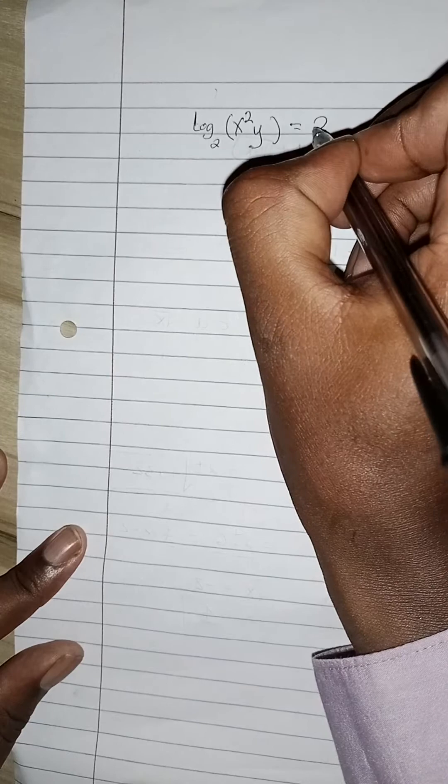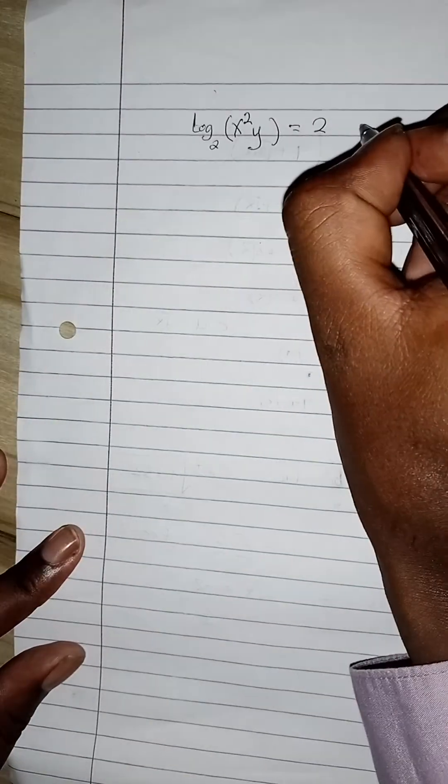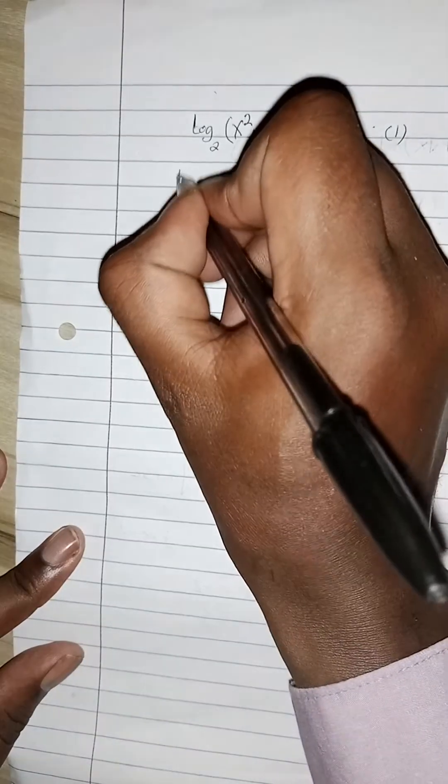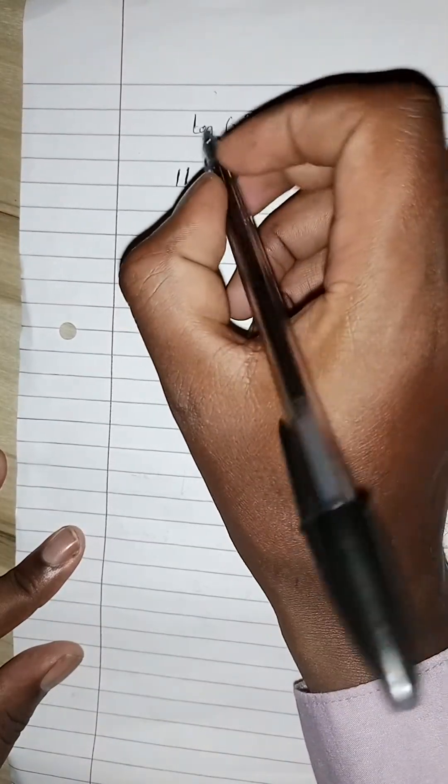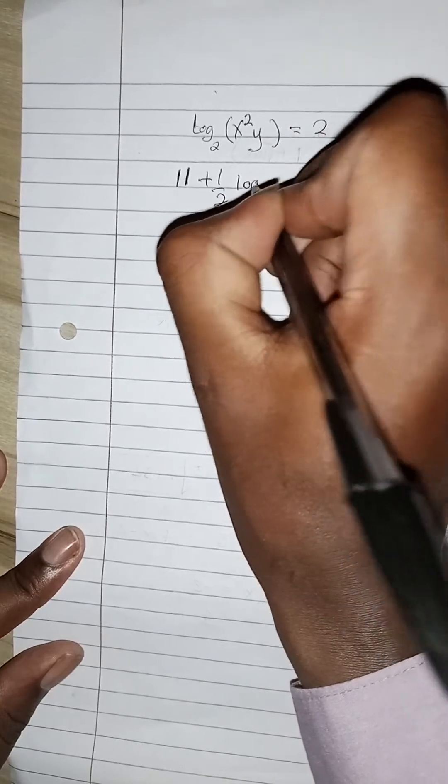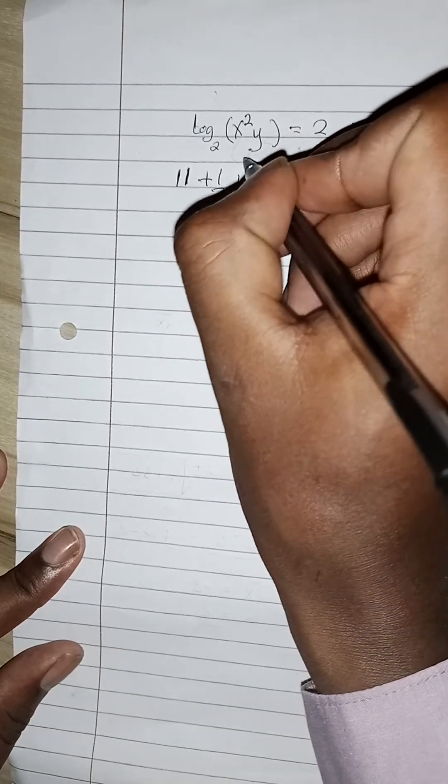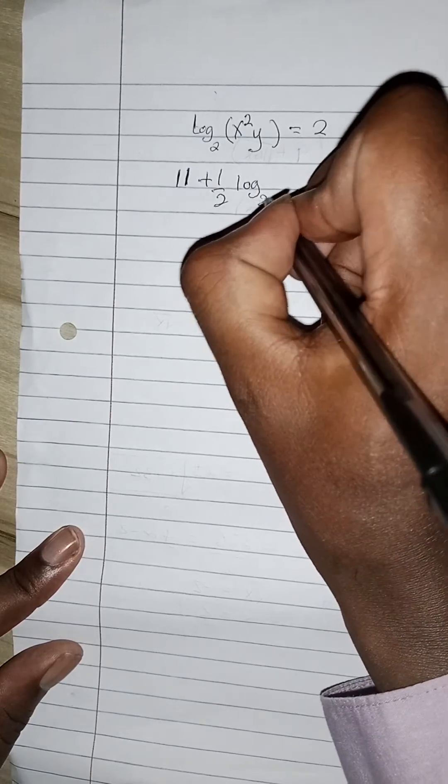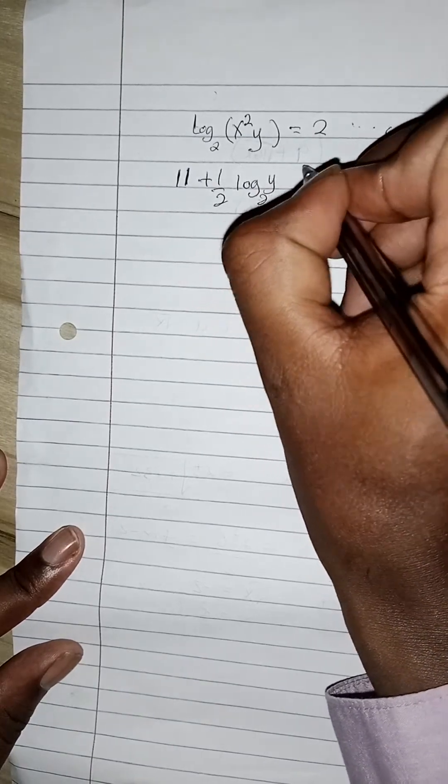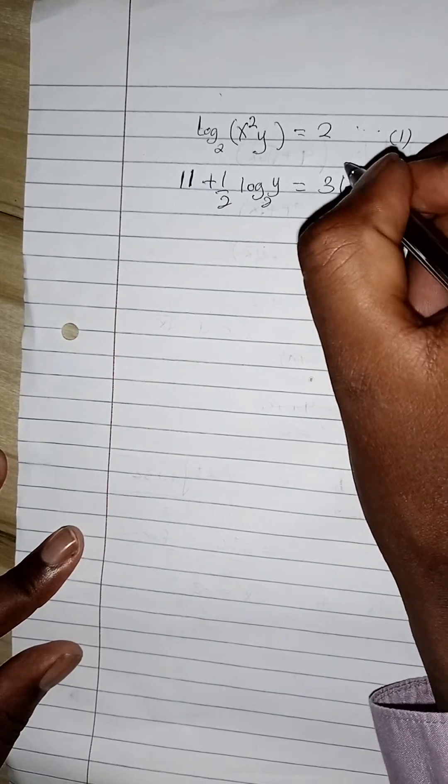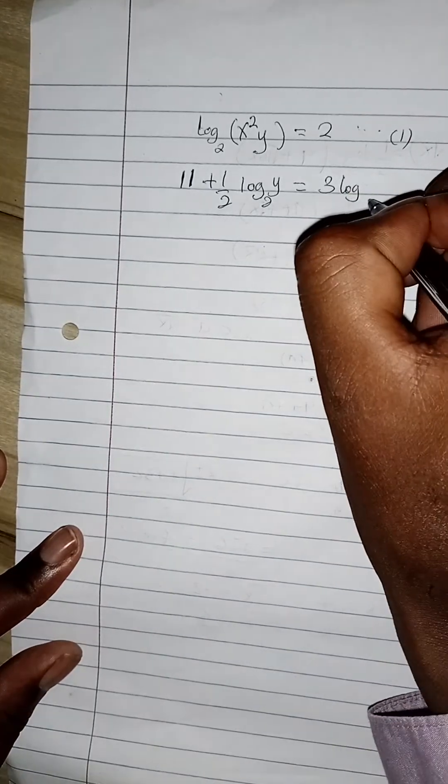equals 2. Actually, it's a simultaneous equation. So that is question number one. Question number two is: eleven plus a half log to base 2 of y should be equal to three log to base 2 of x.